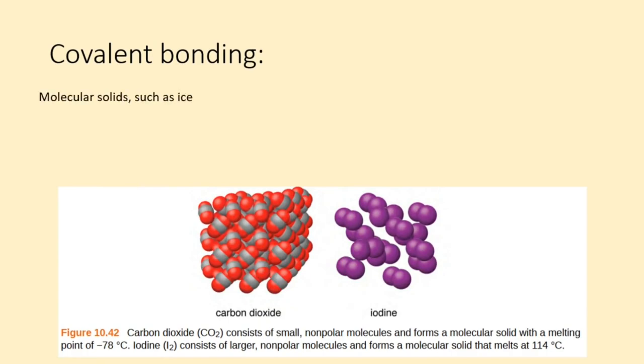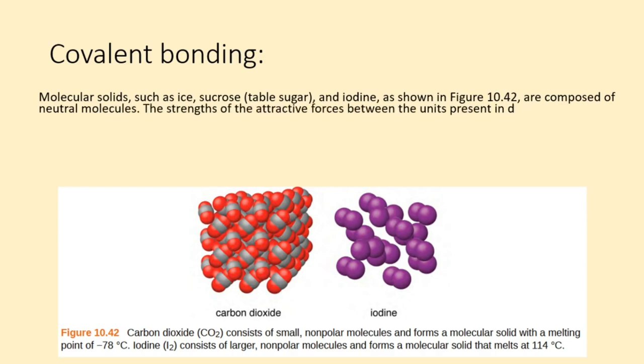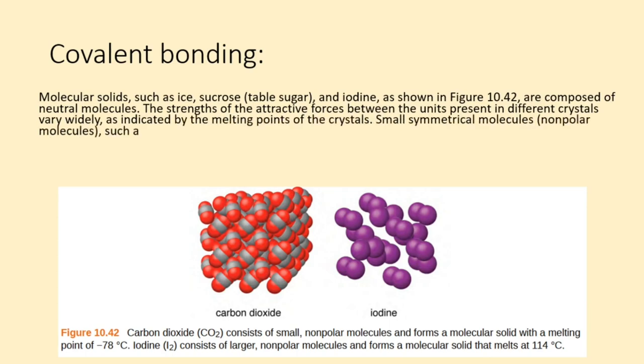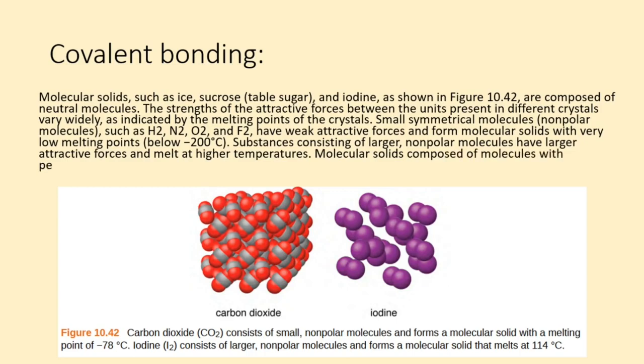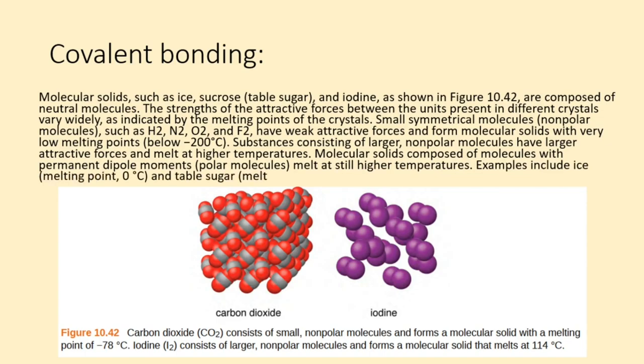Molecular solids, such as ice, sucrose (table sugar), and iodine, as shown in figure 10.42, are composed of neutral molecules. The strengths of the attractive forces between the units present in different crystals vary widely, as indicated by the melting points of the crystals. Small symmetrical molecules, nonpolar molecules, such as H2, N2, O2, and F2, have weak attractive forces and form molecular solids with very low melting points, below -200°C. Substances consisting of larger nonpolar molecules have larger attractive forces and melt at higher temperatures. Molecular solids composed of molecules with permanent dipole moments, polar molecules, melt at still higher temperatures. Examples include ice, melting point 0°C, and table sugar, melting point 185°C.